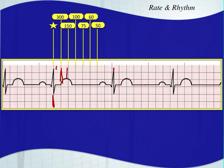If your next QRS complex was right there with two boxes in between, you do 300 divided by two, and you would have 150 beats per minute.